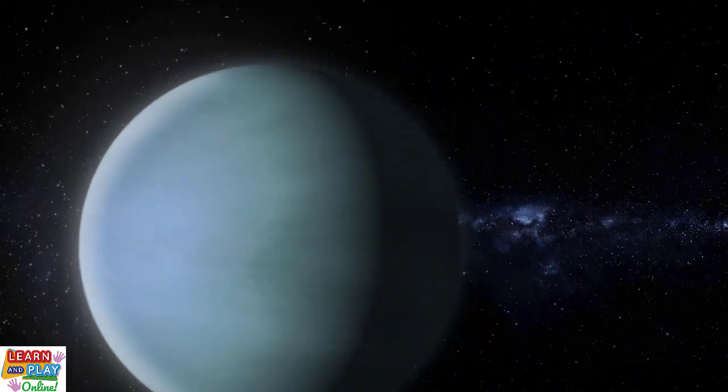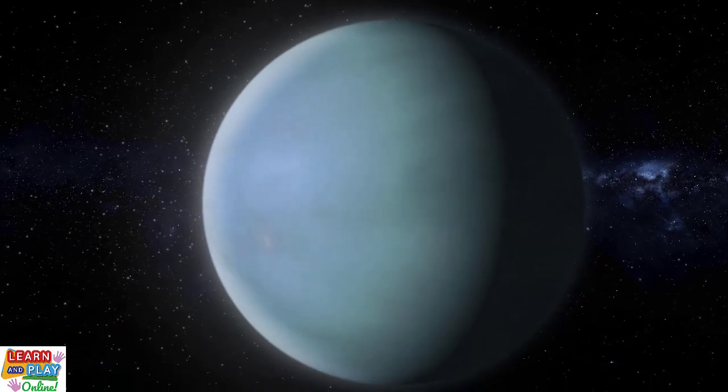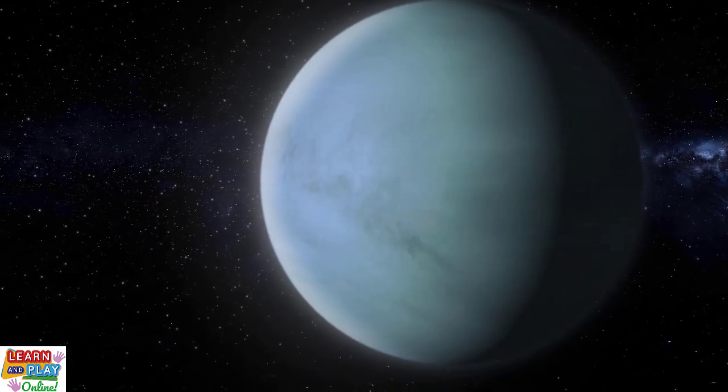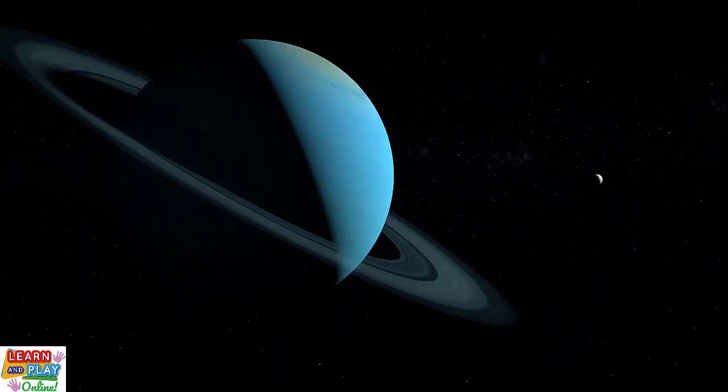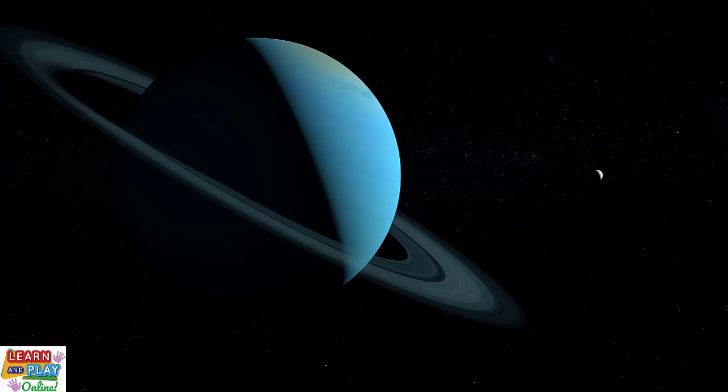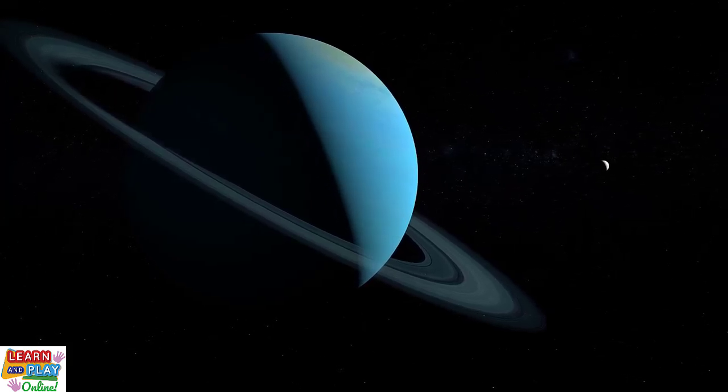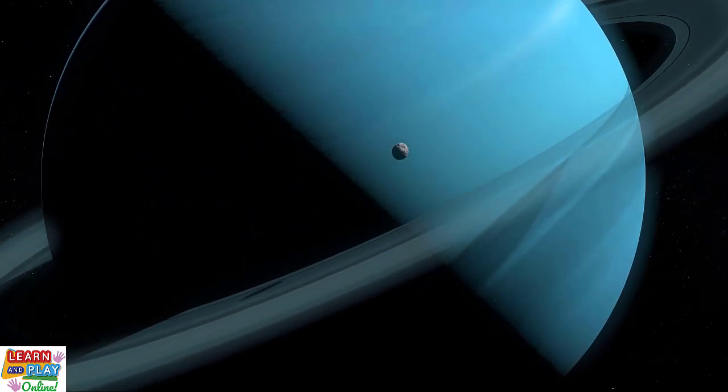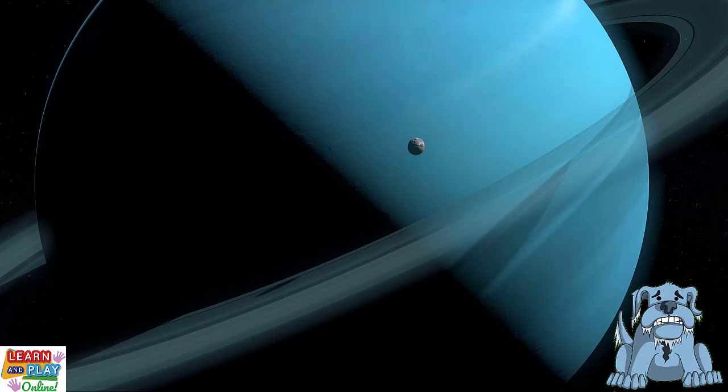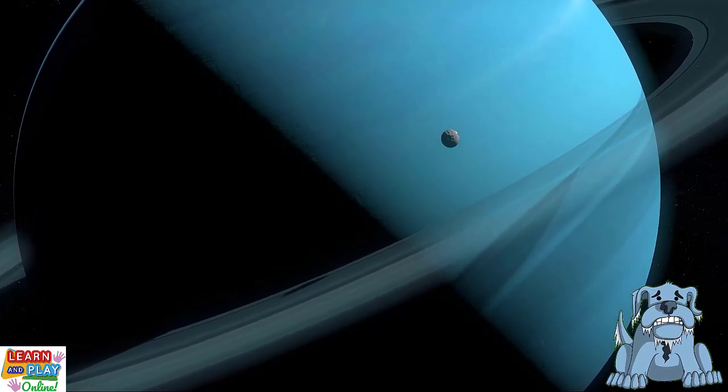Given its distance from the sun, Uranus is a cold planet. Even though it is not the furthest from the sun, it is however the coldest planet in the solar system. It is so cold there that it averages temperatures of minus 320 degrees Fahrenheit or minus 195 degrees Celsius. The coldest temperature ever recorded on Uranus, however, was minus 370 degrees Fahrenheit or minus 224 degrees Celsius.